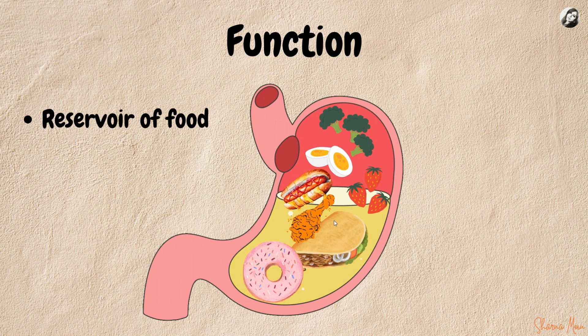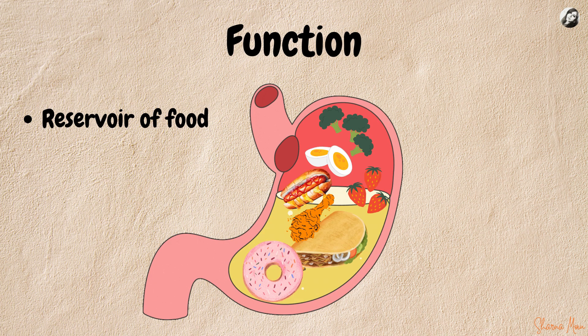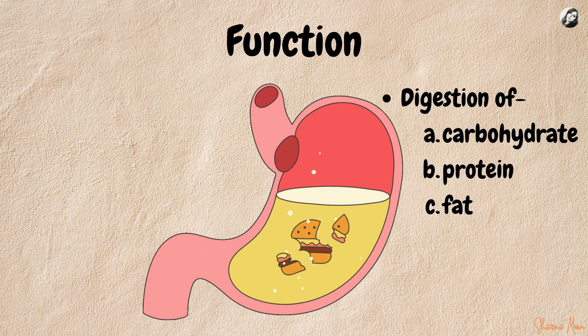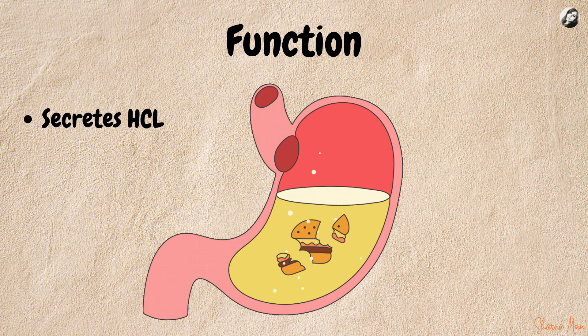Now, what are the functions of the stomach? The stomach acts as a reservoir of food, and through repeated turning motions it transforms the food into chyme, which has a uniform consistency. The stomach helps in digestion of carbohydrates, proteins, and fats. It secretes hydrochloric acid, which makes the environment acidic, and it also secretes pepsin, which in this acidic environment breaks down the protein into proteases and peptides. The hydrochloric acid also protects the stomach against bacterial invasion.